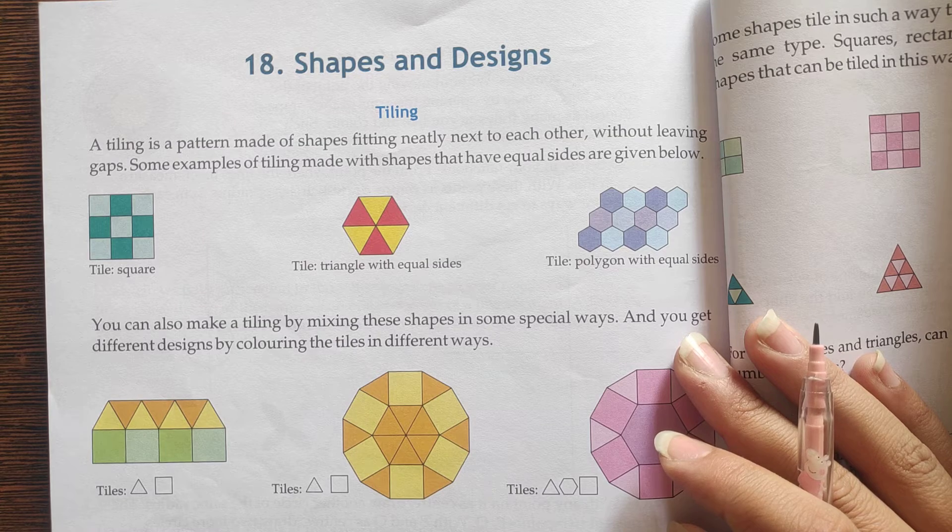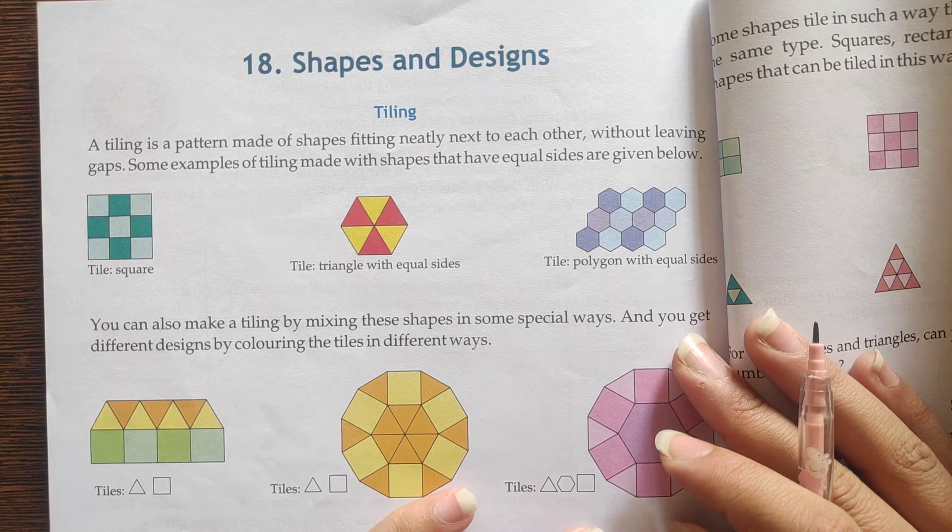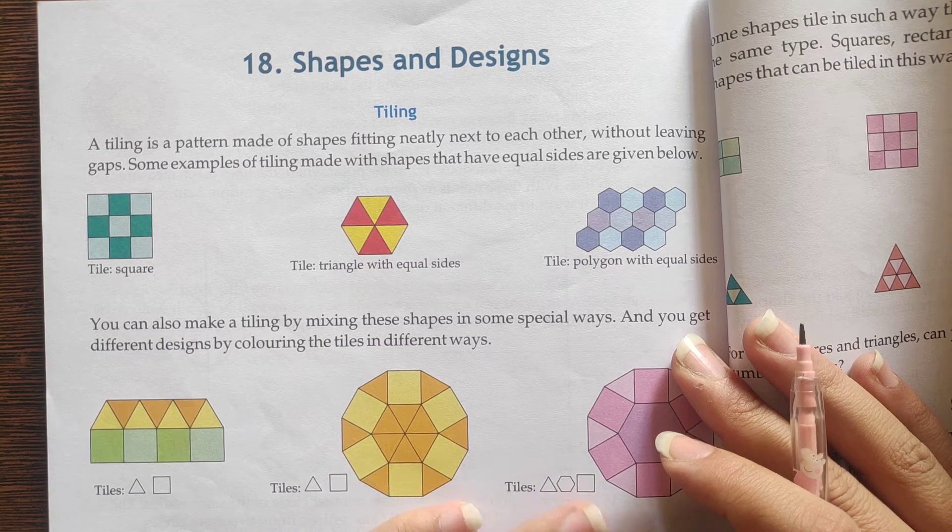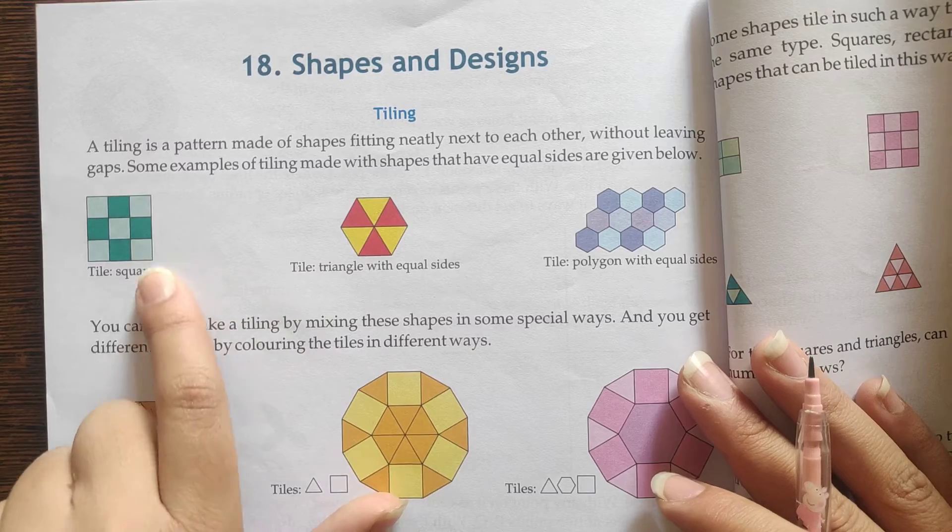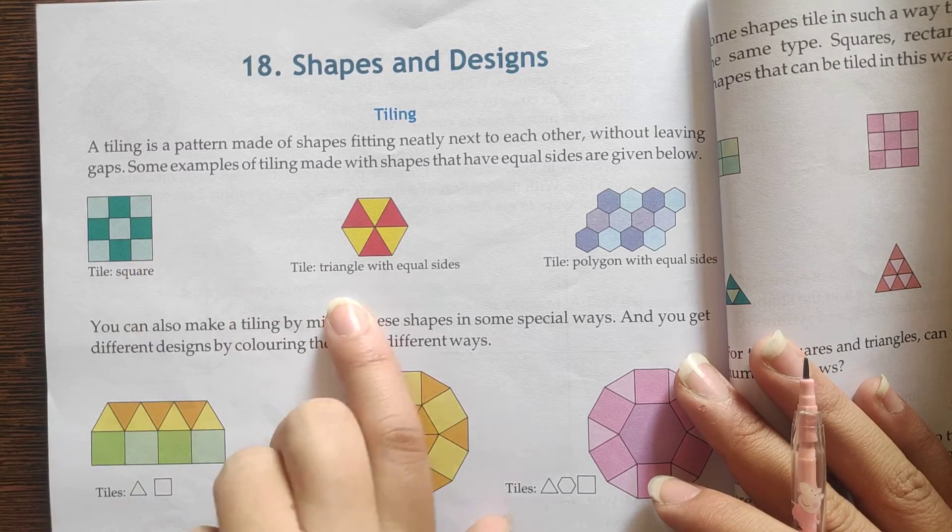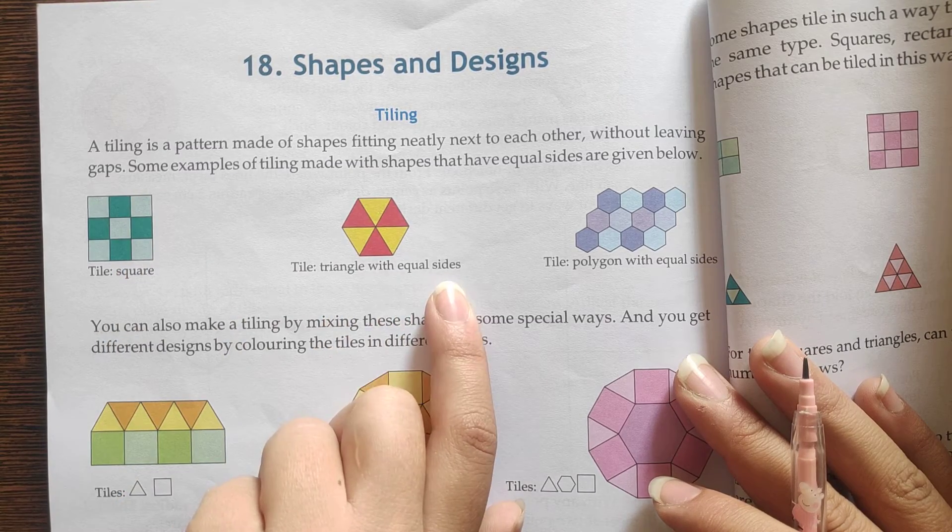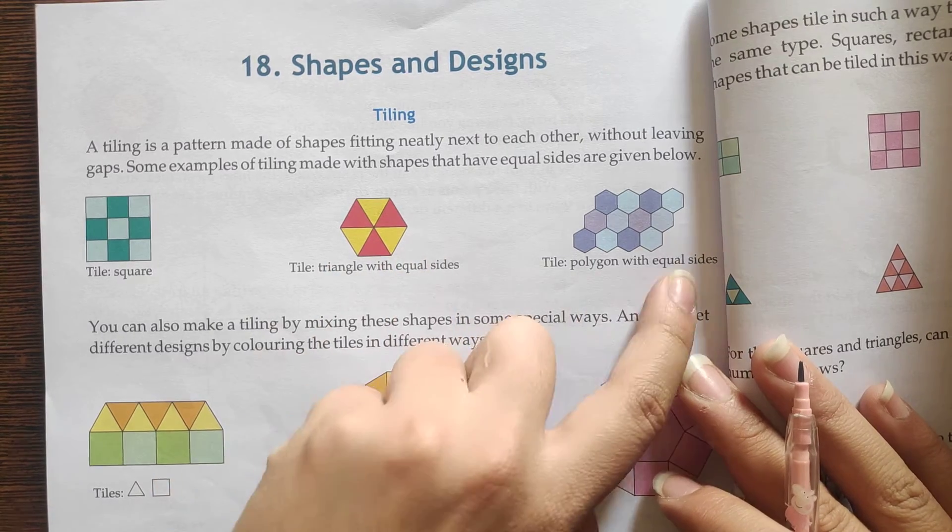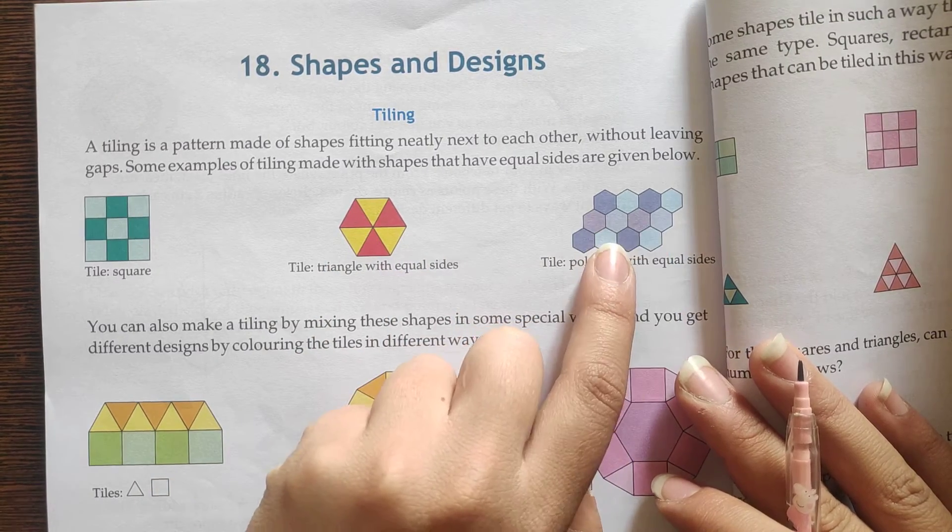Let's see, there is a pattern made of shapes fitting neatly next to each other without leaving gaps. This is a triangle with equal sides, an equilateral triangle. This is a polygon with equal sides.